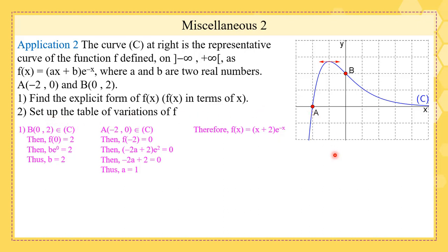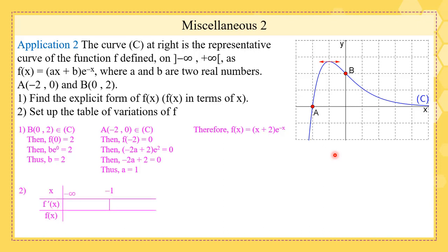The second part asks to set up the table of variations of f. The domain is (−∞, +∞). From the graph, the curve increases then decreases, so f' is positive then negative. The limit at −∞ is −∞ and the limit at +∞ is 0. When x = −1, f(−1) = e, so the maximum value is e.